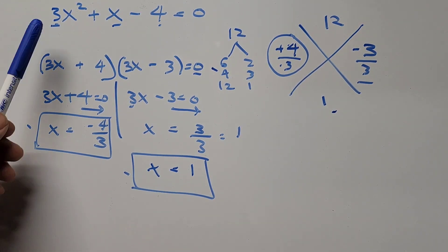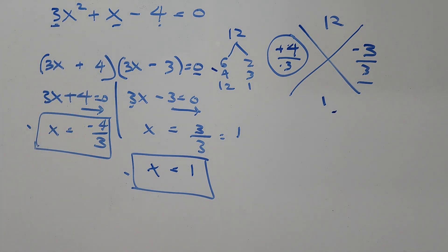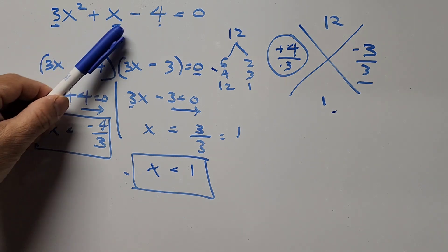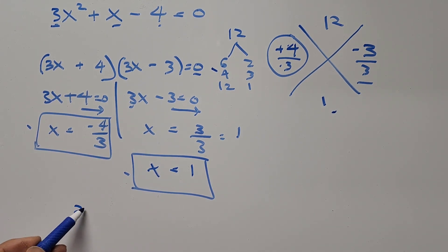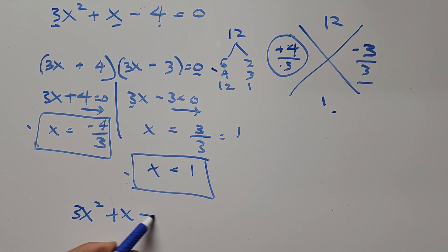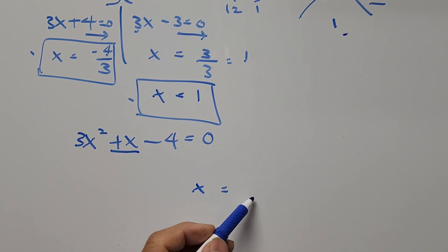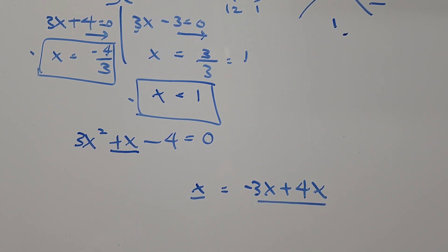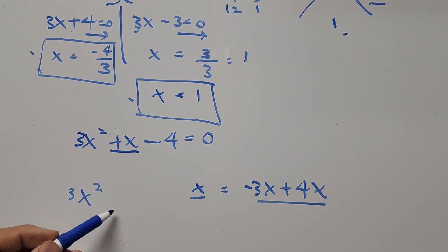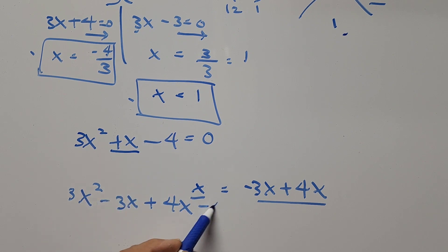The second method is to solve 3x squared plus x minus 4 equals 0 by splitting the middle term. We rewrite positive x as negative 3x plus 4x — which still equals positive x. So the equation becomes 3x squared minus 3x plus 4x minus 4 equals 0.